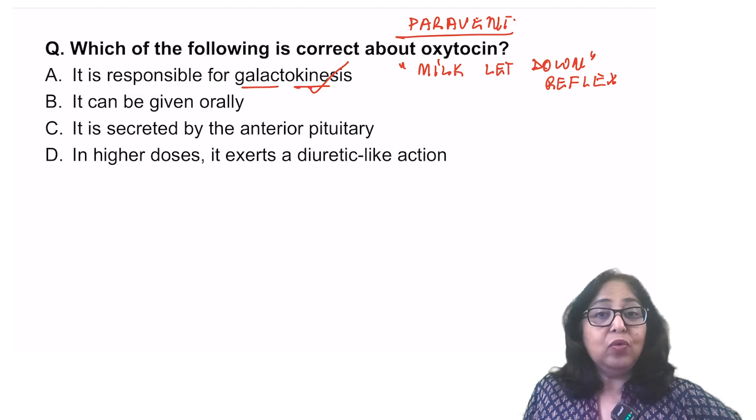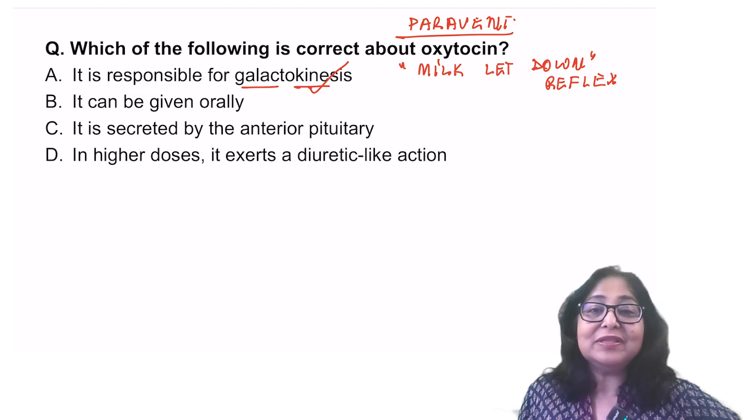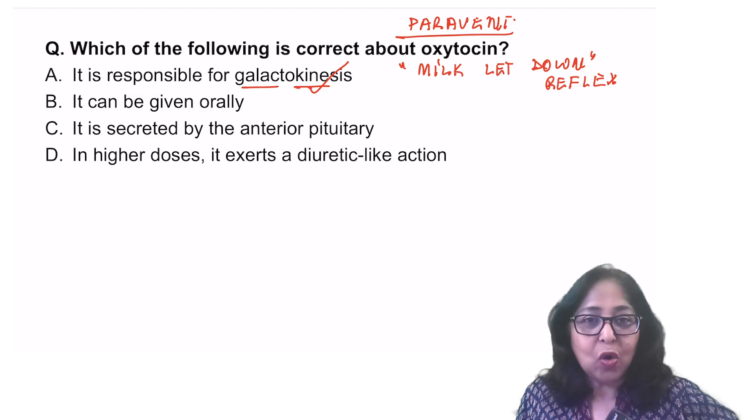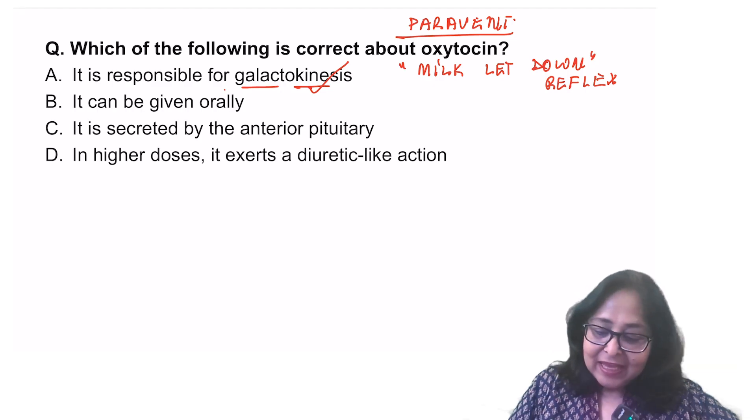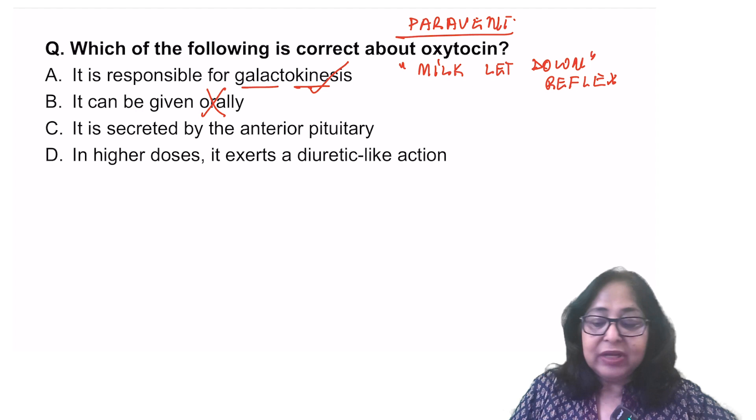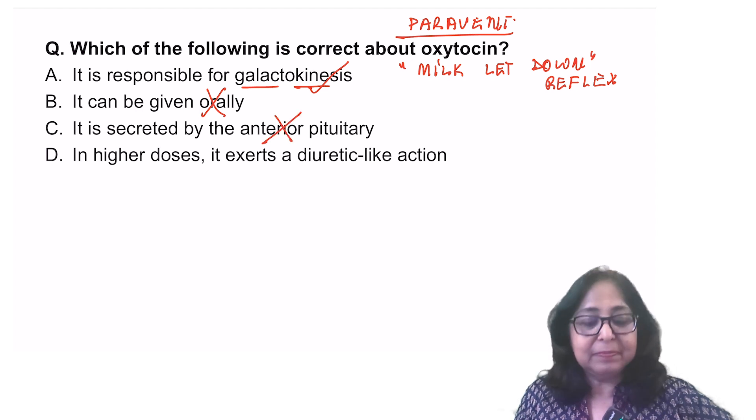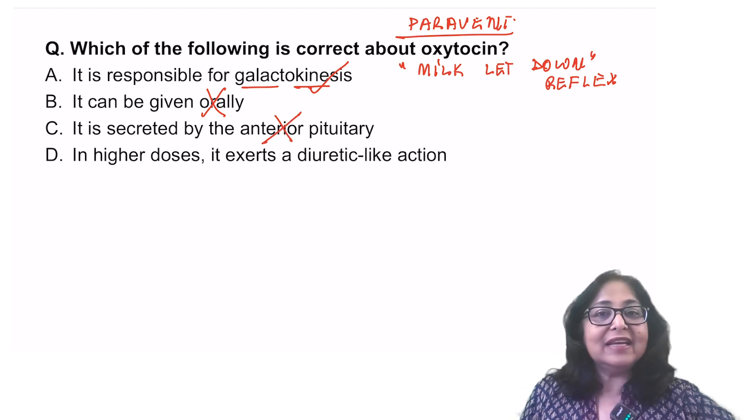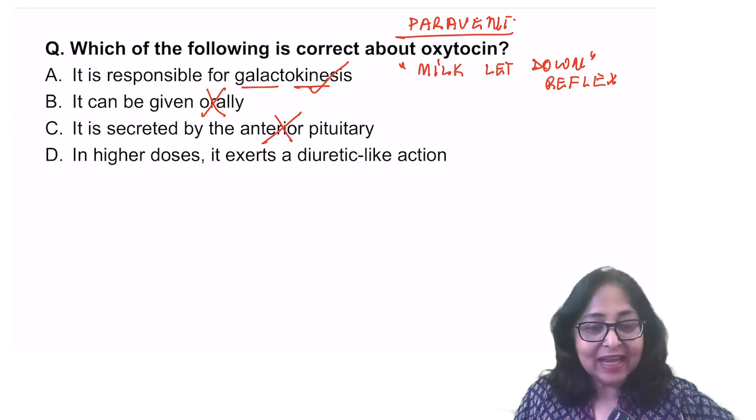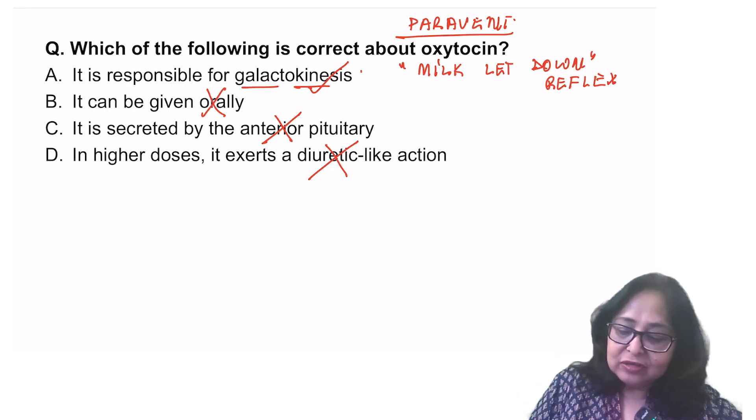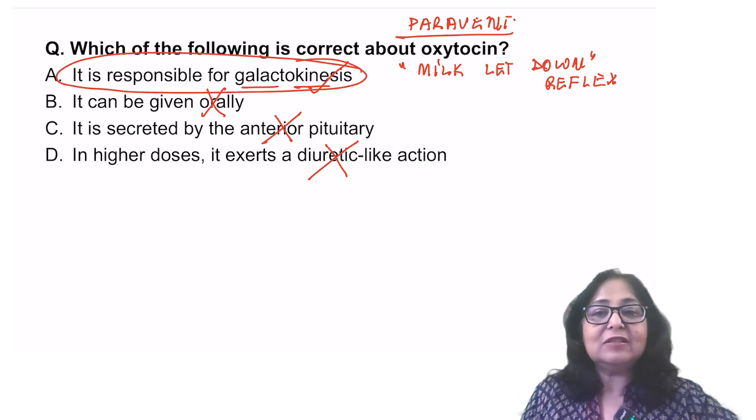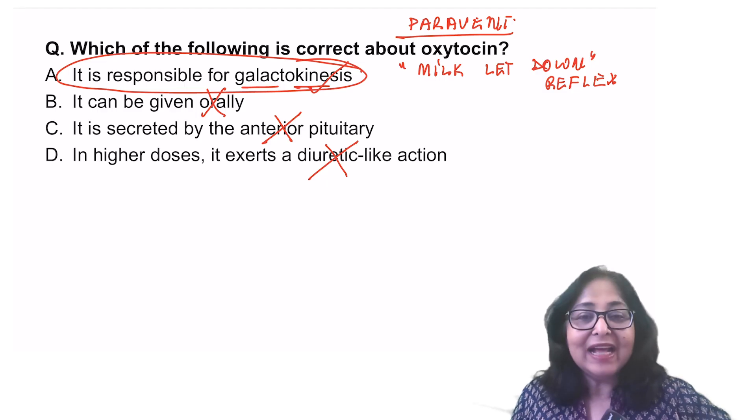It can be given orally? Definitely not. Oxytocin is a peptide hormone. If given orally, it will be digested. It is secreted by the anterior pituitary? No. This is secreted by the posterior pituitary. In higher doses, it exerts a diuretic-like effect? This is false. Definitely is not a diuretic. So the answer to this question is, it is responsible for galactokinesis.